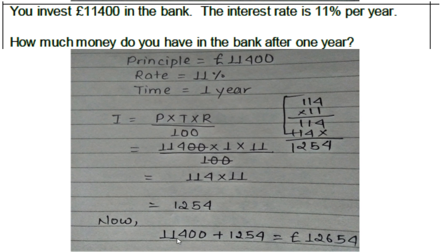1140 times 11 equals 1254. That's the interest. The total amount in the bank after one year is £1254.